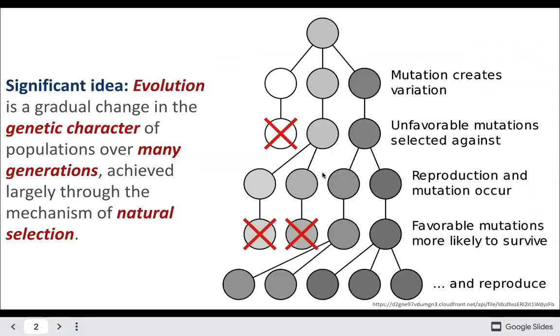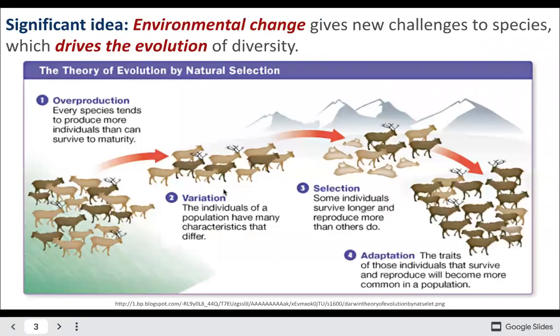Origins of biodiversity. Evolution is the gradual change in genetic character of populations over many generations, achieved largely through the process of natural selection.